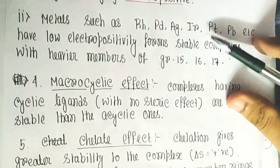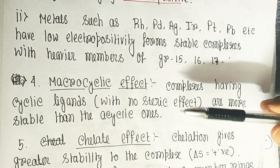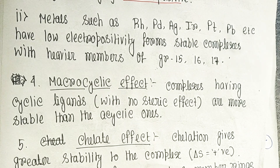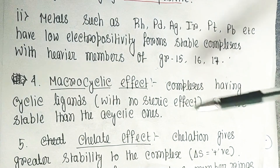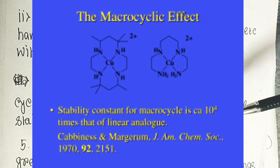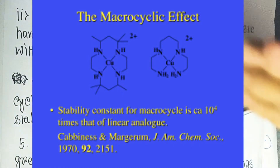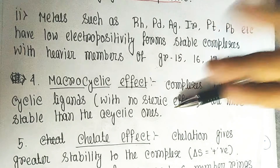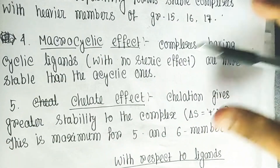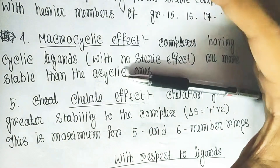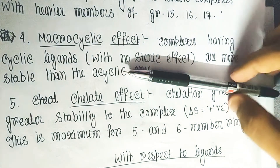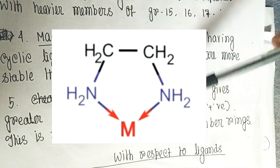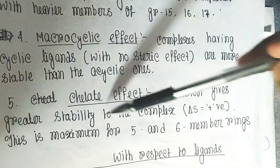The next point is the macrocyclic effect, which is similar to the chelating effect. Macrocyclic compounds include large structures like crown ethers. Complexes formed with cyclic ligands that have no steric effects are more stable than acyclic ones. The chelating effect involves ligands like ethylenediamine and glyoximate, where ring formation gives greater stability to the complexes.